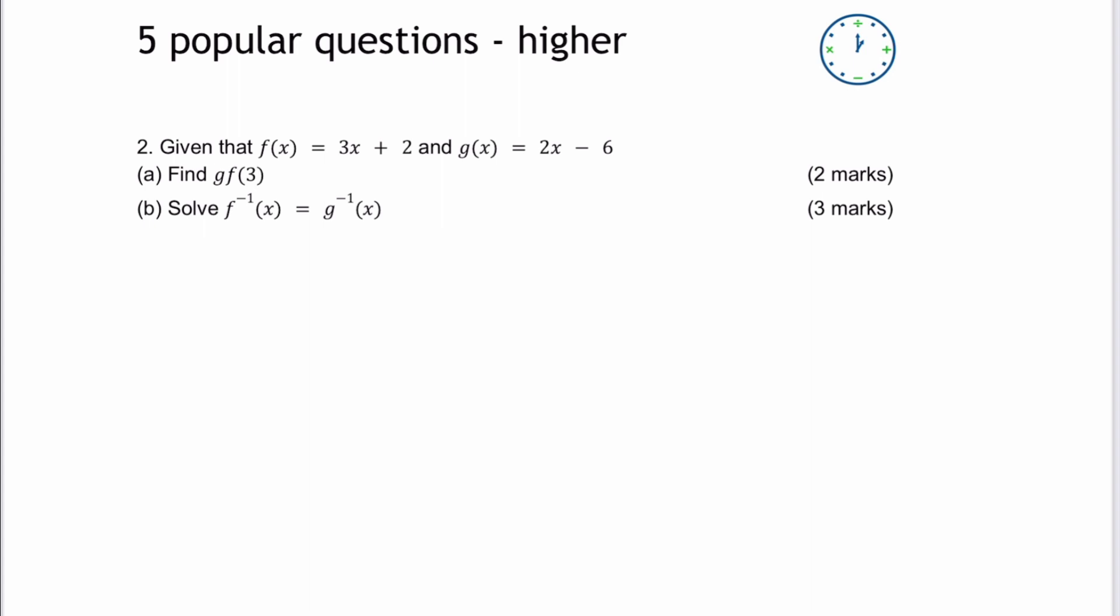What we're basically doing with part A is saying we need to firstly work out the function of three. So the function of three is where we take the value of three and we put it directly into the function itself. So it's going to become three multiplied by three plus two, and that's going to give us a value of 11.